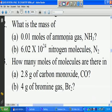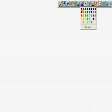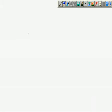Now let's continue with question number 3: how many moles of molecules are there in (a) 2.8 grams of carbon monoxide CO, (b) 4 grams of bromine gas. The keyword is how many moles of molecules, so they are giving us actual mass. If you want to find number of moles, use actual mass divided by standard mass.